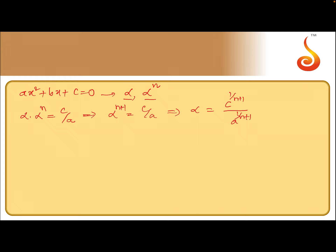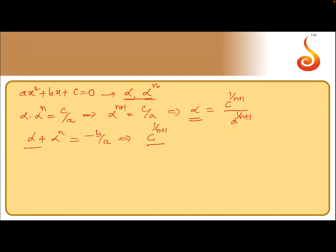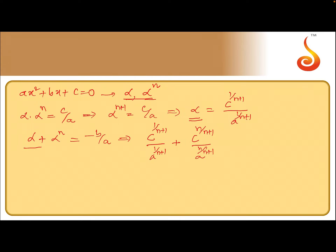Now let us consider the sum of the roots: α + α^n = −b/a. Substituting the value of α: c^(1/(n+1)) / a^(1/(n+1)) plus α^n, which equals c^(n/(n+1)) divided by a^(n/(n+1)), and that equals −b/a. Let us multiply by a on the left-hand side.